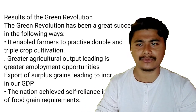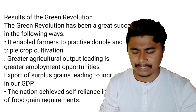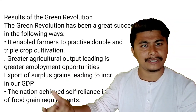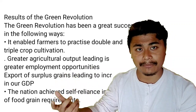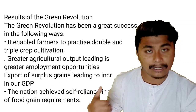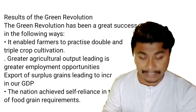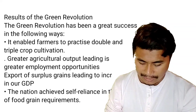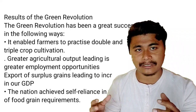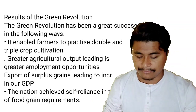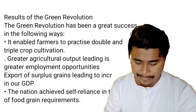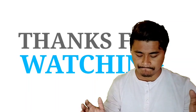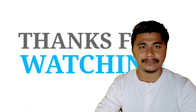The Green Revolution was quite successful and fruitful for both farmers and the government. Some of the results were: it enabled farmers to practice double and triple cropping on the same farmland, led to greater agricultural output and greater employment, enabled export of surplus grain which increased GDP, and the country achieved self-reliance in food grain requirements. I hope this video was helpful and informative. Thanks for watching.